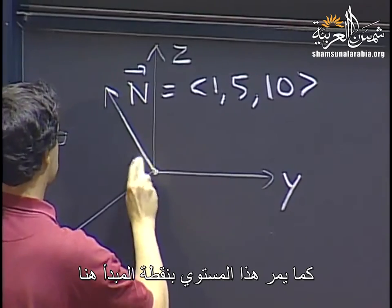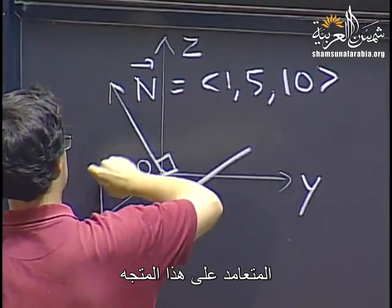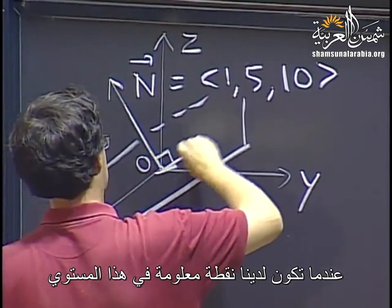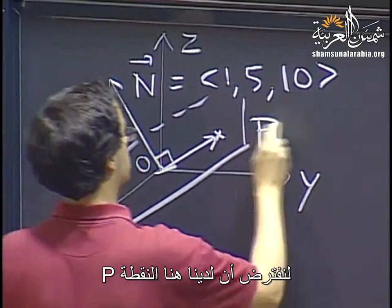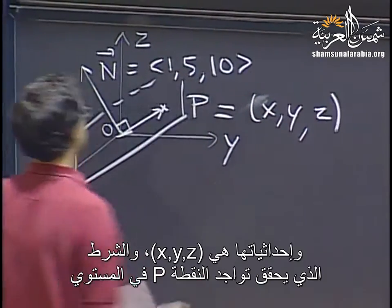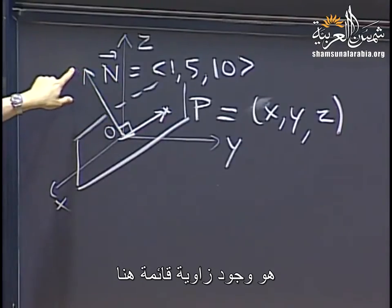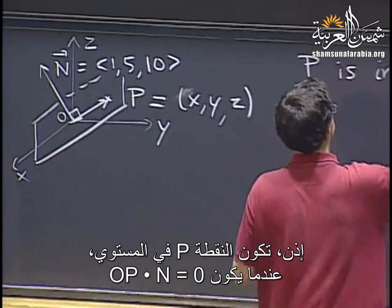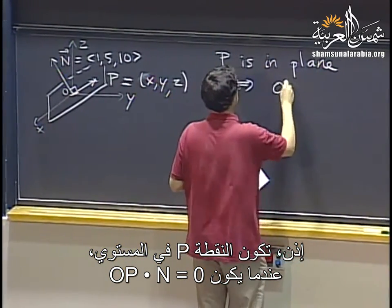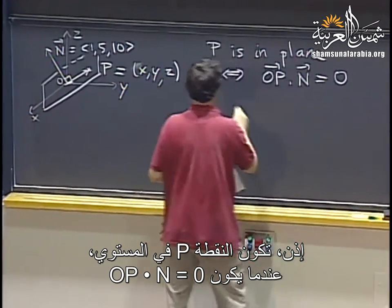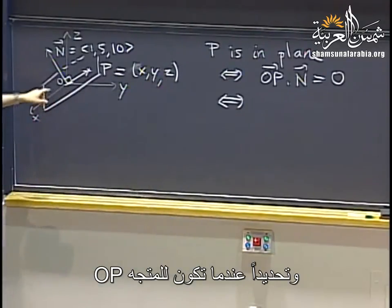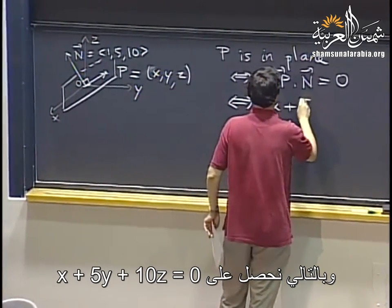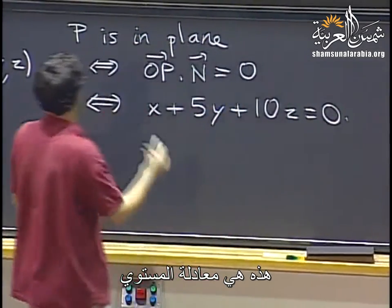We want to think of a plane that is perpendicular to this vector. When is a point P at coordinates x, y, z in the plane? The condition for P to be in the plane should be that we have a right angle, so P is in the plane whenever OP dot n equals zero. Vector OP has components x, y, z and n has components 1, 5, 10. That gives us x plus 5y plus 10z equals zero. That's the equation of our plane.